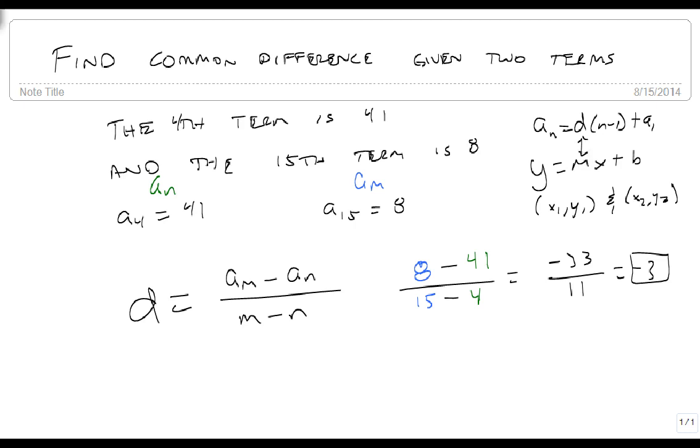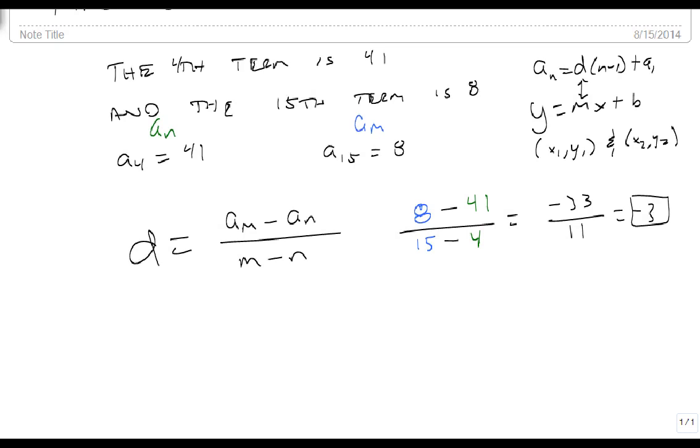And of course, once we have the common difference, then we just need, we know that a4 equals minus 3 times 4 minus 1 plus a1. We can get our a1 just by plugging this in, so a4,